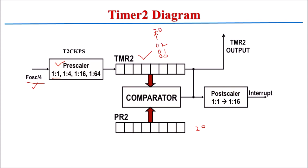Every time the TMR2 count is incremented by 1, the comparator compares the contents of the TMR2 register with PR2. When the TMR2 value reaches 0x20, the comparator generates an output signal because both counts are equal. The TMR2 output signal can be post-scaled using the post-scaler option — 1:1 up to 1:16 — and then it will generate an interrupt signal. Generally we use 1:1, so whenever the comparator generates an output, we get an interrupt signal.